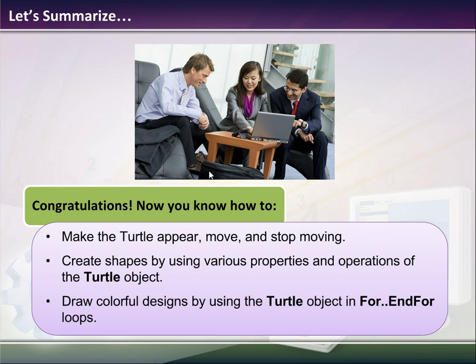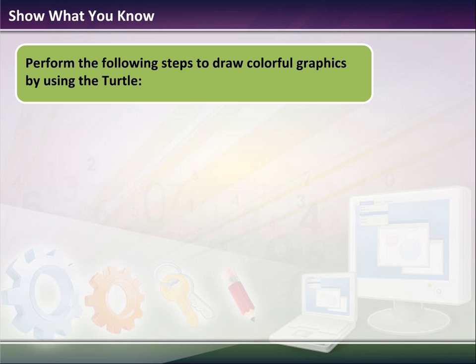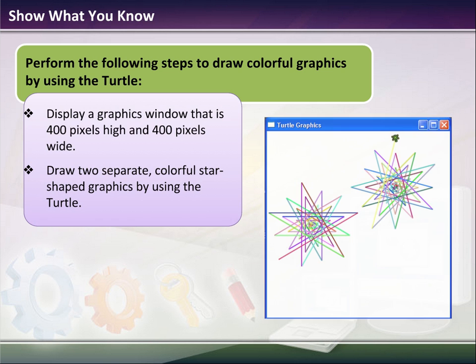So, we should be able to make the turtle appear, move, and stop moving. We should be able to create shapes by using various properties of the operation of the turtle object. And we could draw some colorful designs with the turtle object by using for and end for loops. And so, you should know, and I'm going to do something similar to this, but we should be able to make a graphics window, put a title in it, randomly choose some colors, and make the turtle move around the screen and draw some cool pictures.